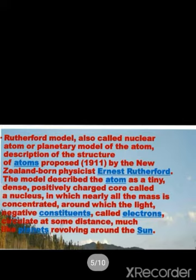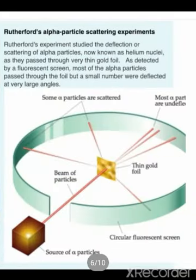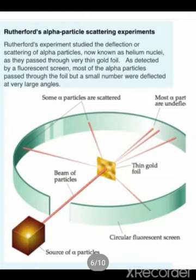This model is based on an experiment called the alpha particles scattering experiment, which tells us what is inside the space of an atom. In this experiment, he used alpha particles and gold foils. Why gold foils? Why not other matter? Gold is malleable — we can easily convert it into thin sheets. Alpha particles are positively charged particles, like the nucleus of a helium atom.